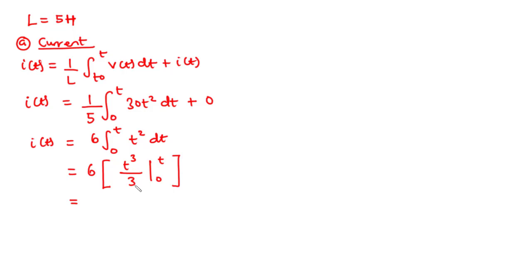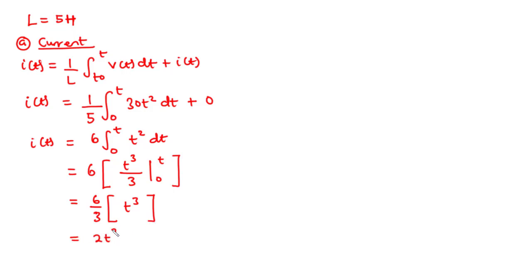Since 1/3 is a constant we pull it out, giving us 6 over 3, and then t cubed. Therefore we have 2t³, and this is the current i(t) — the current expression when t is greater than zero.